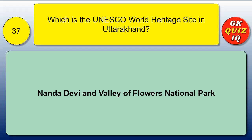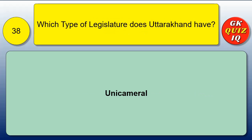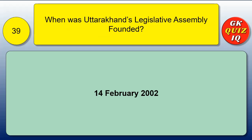Which is the UNESCO World Heritage Site in Uttarakhand? Nanda Devi and Valley of Flowers National Park. What type of legislature does Uttarakhand have? Unicameral. When was Uttarakhand's Legislative Assembly founded? 14th February 2002.